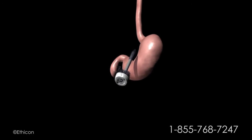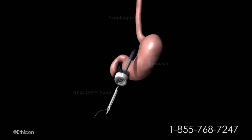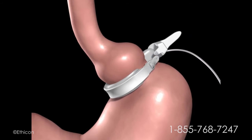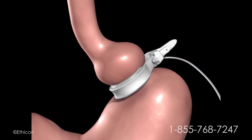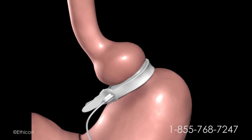In preparation for the band, a tunnel is created behind the stomach. The band is introduced to the abdomen through a trocar and positioned around the upper portion of the stomach, then secured using the locking mechanism.